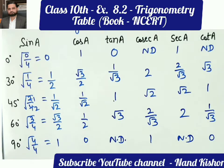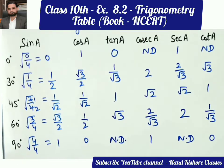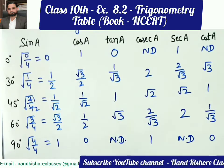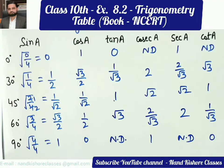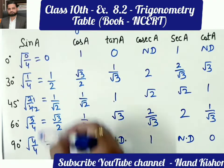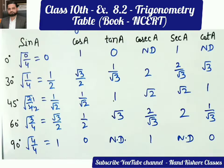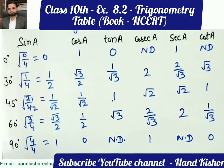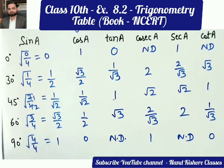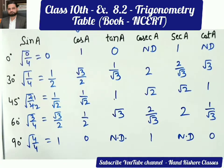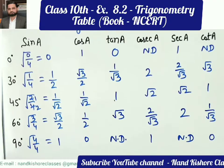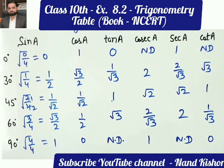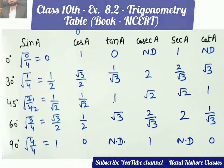So this is the complete table. I would say: learn the first column — 0, 1/2, 1/√2, √3/2, and 1 — and the other values follow from those five. It is not difficult, it is very easy. Please practice it and try to prepare the table at home. In our next lecture we are going to start exercise 8.2. Thank you so much.